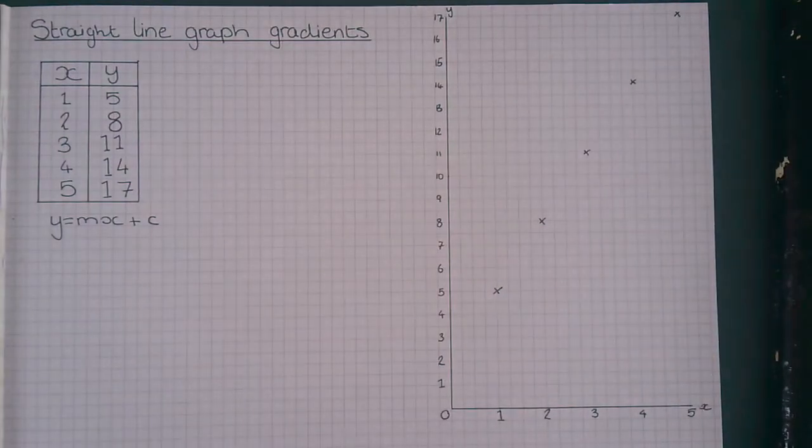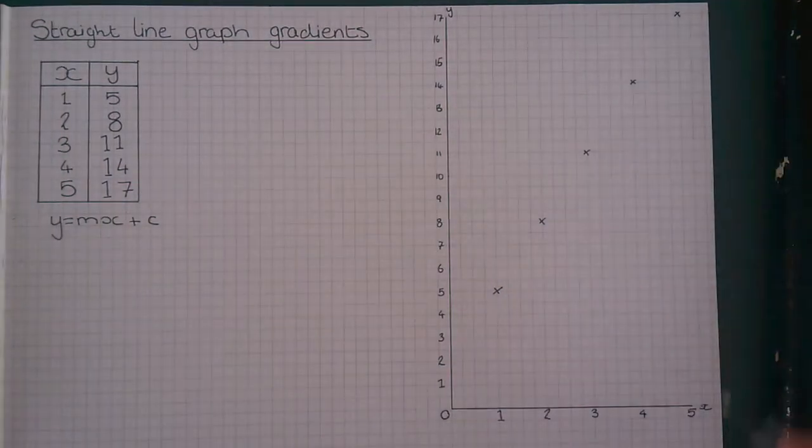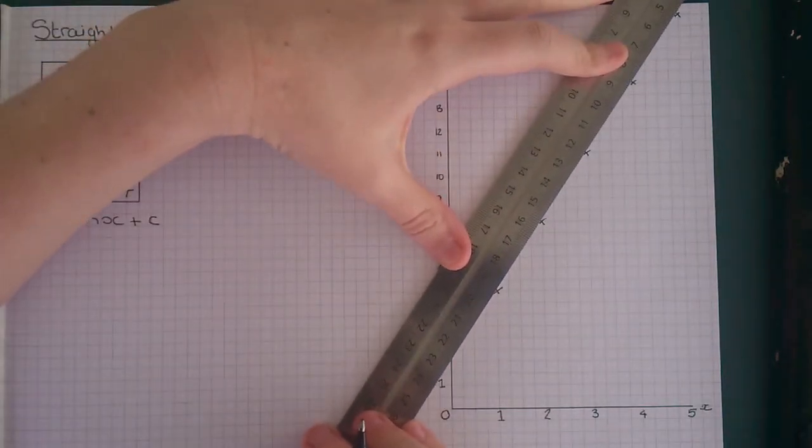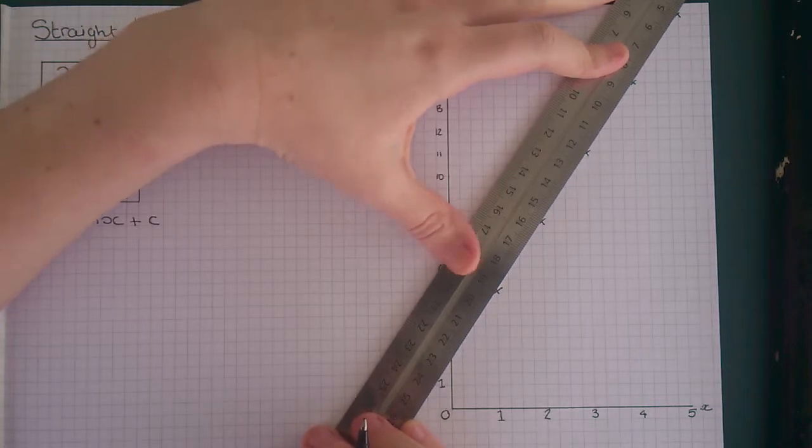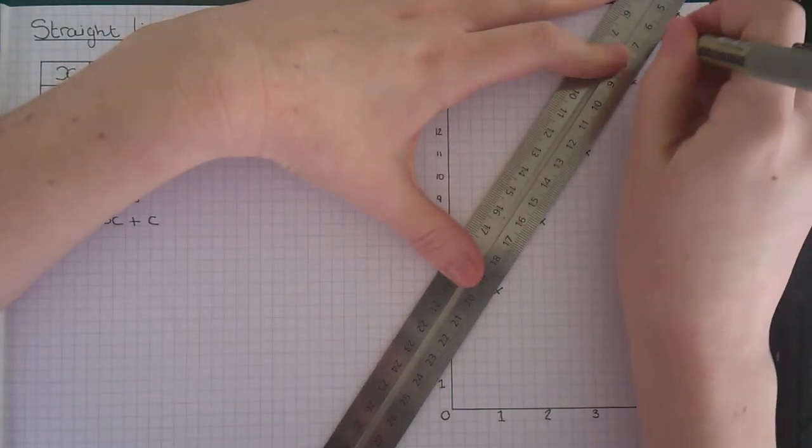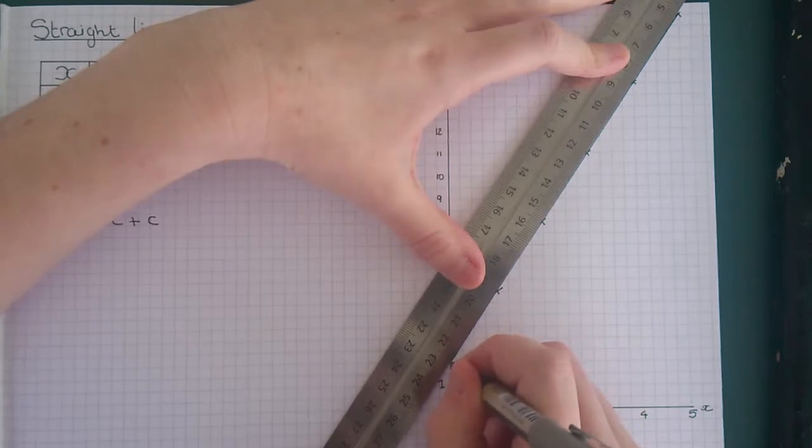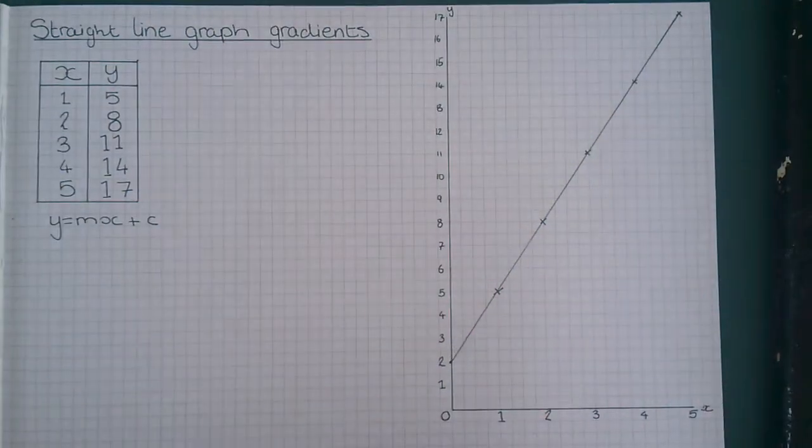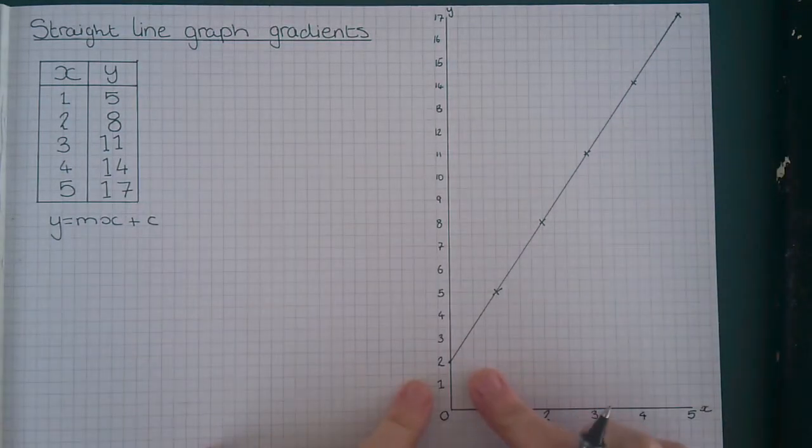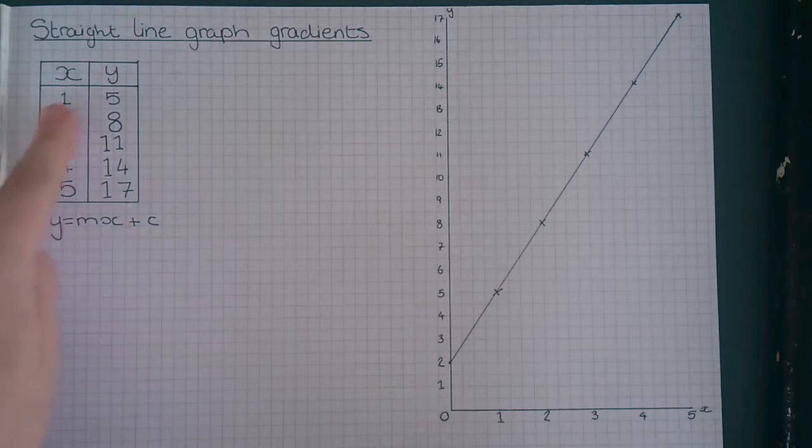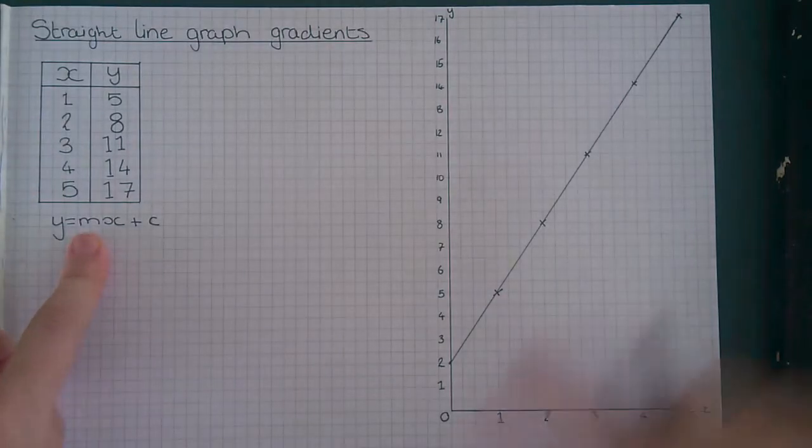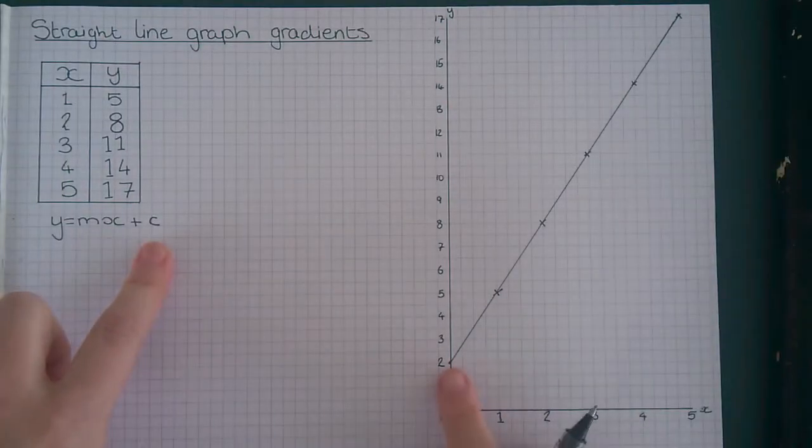Next thing we need to do is draw a line of best fit which goes roughly through the center of the points. This is the equation of a straight line and we're going to use it to work out the gradient and y-intercept of this line. x and y relate to corresponding points of x and y on the graph, so these coordinates.